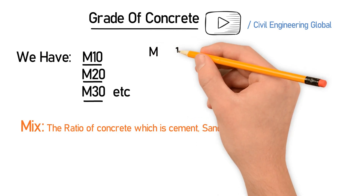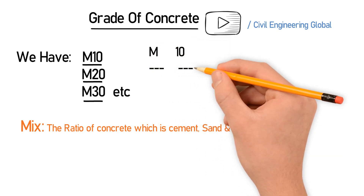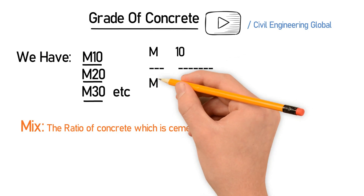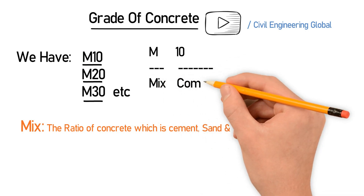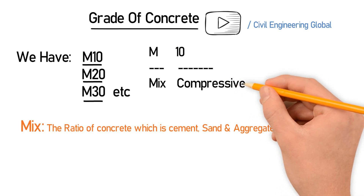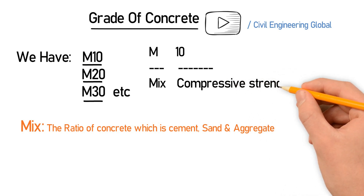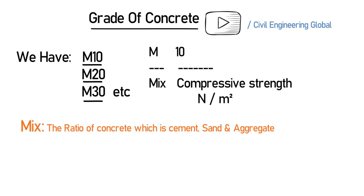Let's come back to the topic. What does M10, M20, M30 mean? M means the mix of concrete, sand, and aggregate, and the number is the compressive strength in Newton per millimeter square.